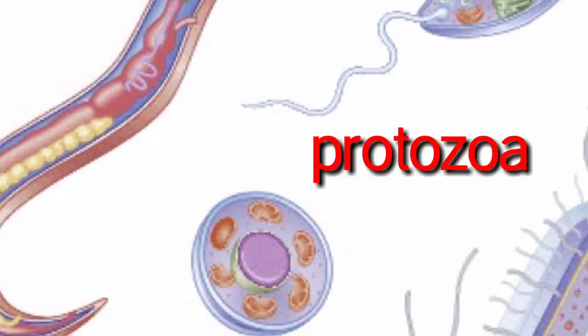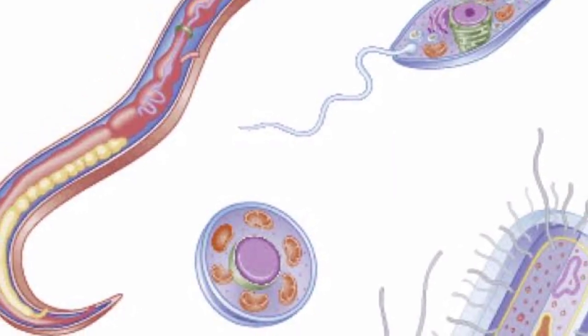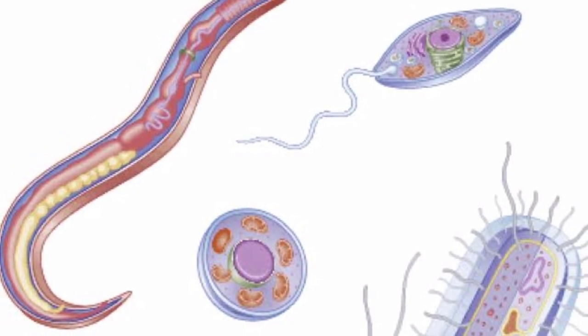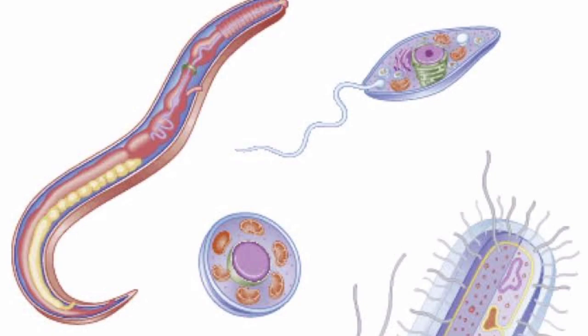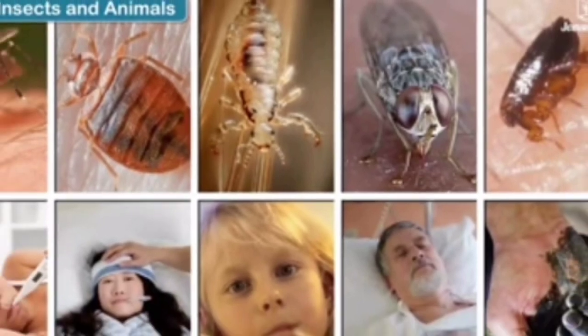Protozoa are bigger than bacteria in size. They are single-celled organisms and can move from place to place. They are classified as animals. Amoeba and paramecium are common protozoa. Some protozoa live in fresh water, some in salty water, and others in the soil. Some protozoa are parasites and live in the bodies of other organisms. They cause diseases like dysentery, malaria, etc.